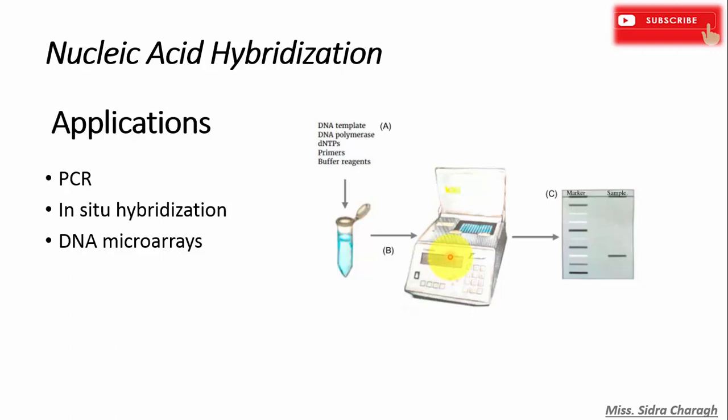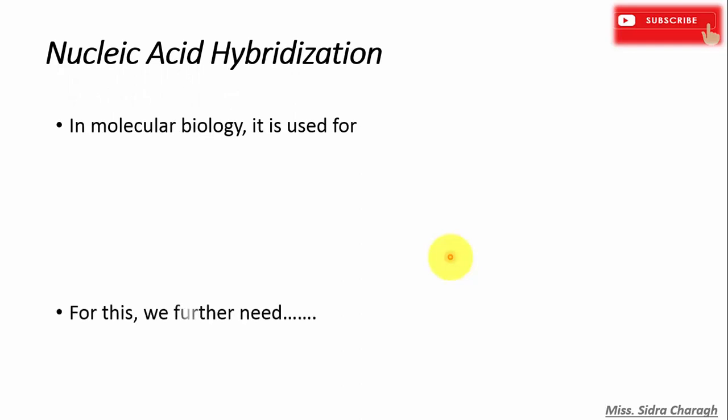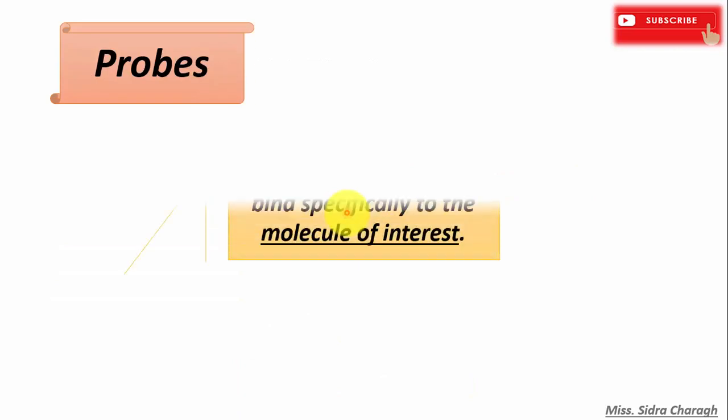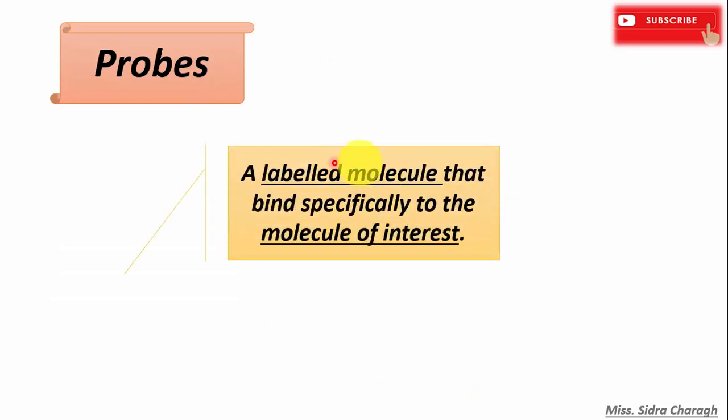So in molecular biology, nucleic acid hybridization is mostly used for the detection of specific DNA sequences in a mixture of DNA fragments or total cell DNA. But for this we also need probes. So what is a probe? A probe can be defined as a labeled molecule that binds specifically to the molecule of interest.